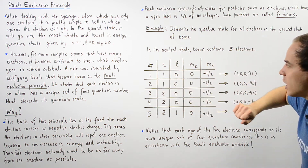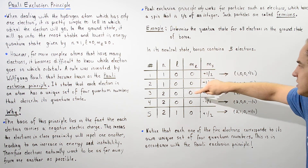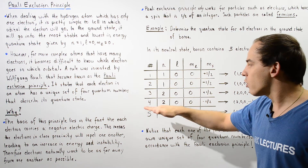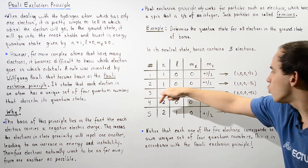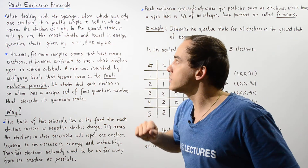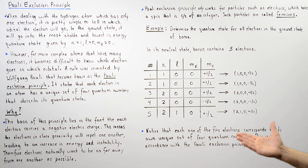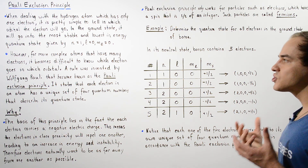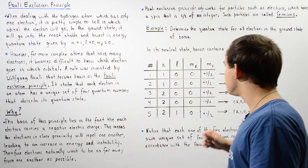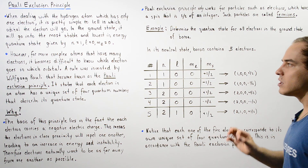For the second electron: n=1, l=0, ml=0, ms=-1/2. These two quantum states differ in the spin quantum number. The third, fourth, and fifth electrons go into the following quantum states, and notice that every single quantum state differs from the others in accordance with the Pauli Exclusion Principle. Each of the five electrons corresponds to its own unique set of four quantum numbers, so we will never find two electrons in the same quantum state with the same four quantum numbers.